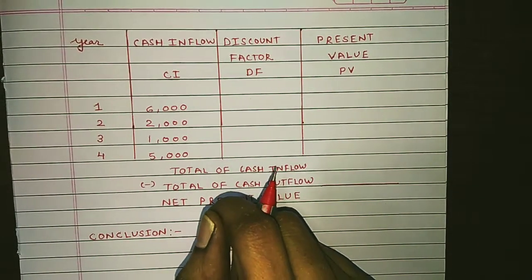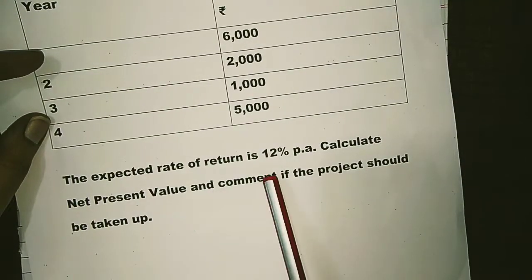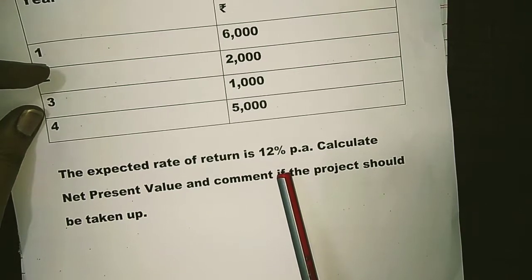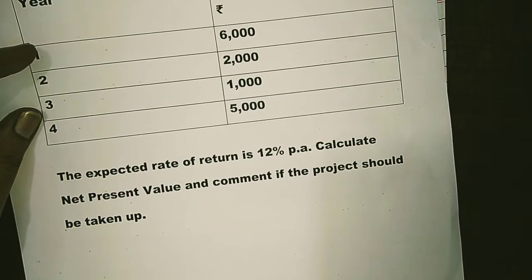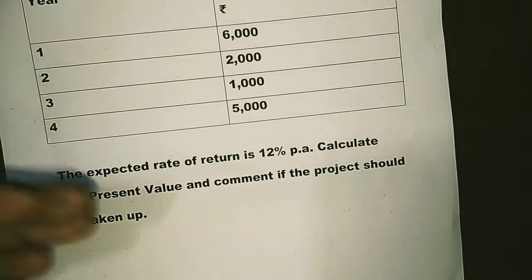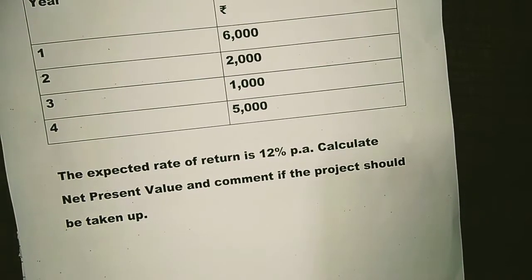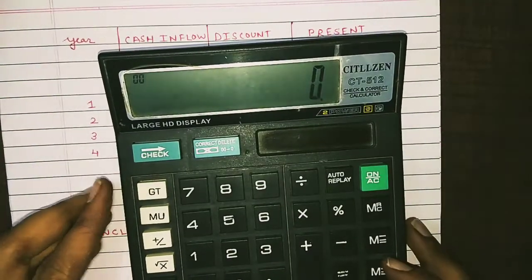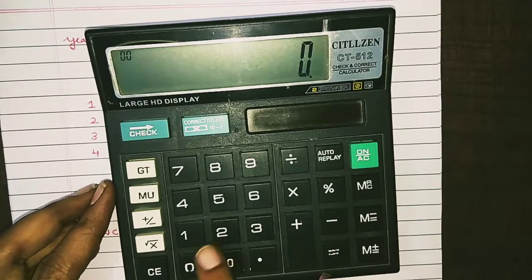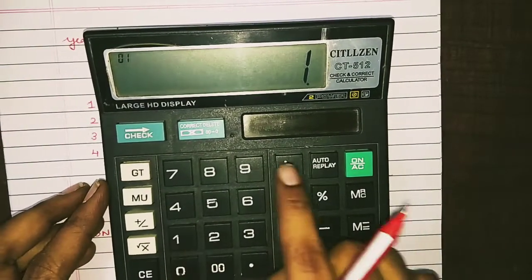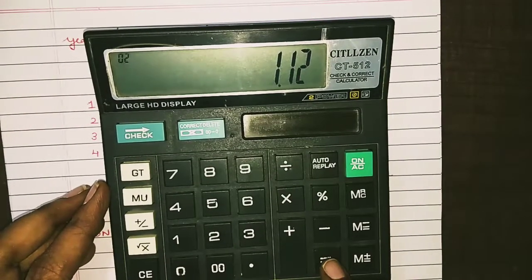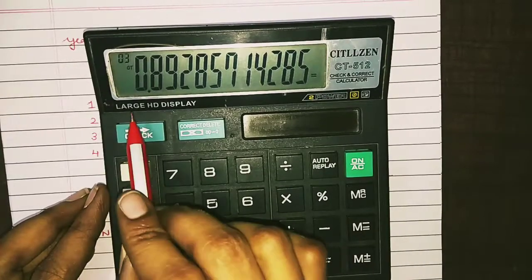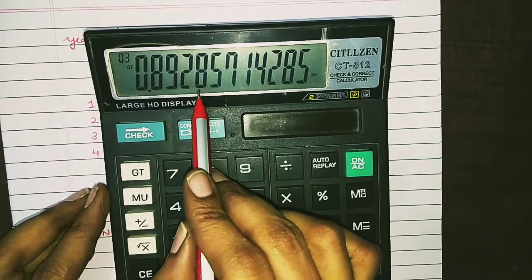The next step is calculation of the discount factor. The expected rate of return is 12 percent per annum, so we calculate the discount factor at 12 percent. I have already uploaded a separate lecture on calculating discount factors — please watch that if you are unfamiliar. For year one, the discount factor is 1 divided by 1.12, which gives 0.893.